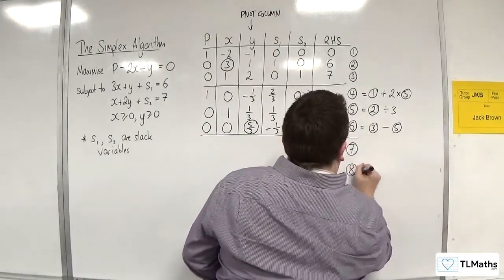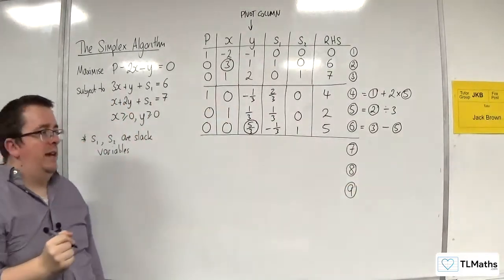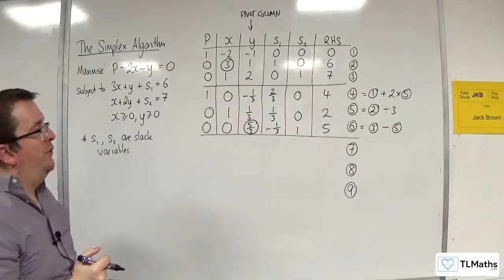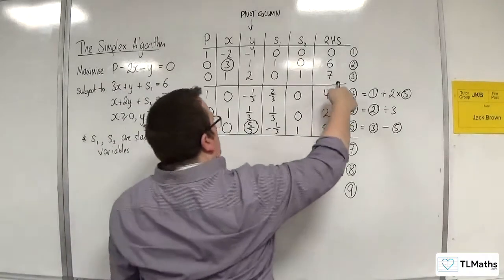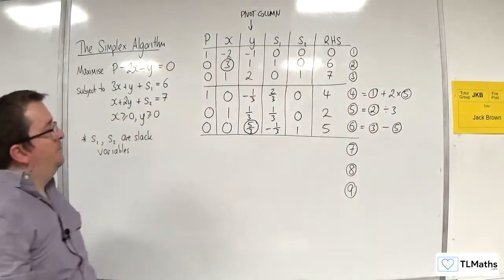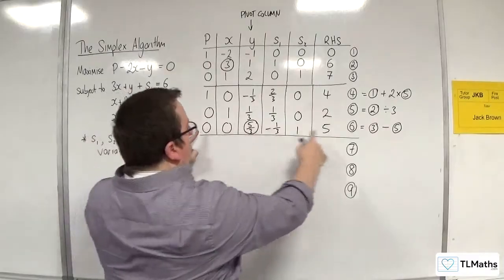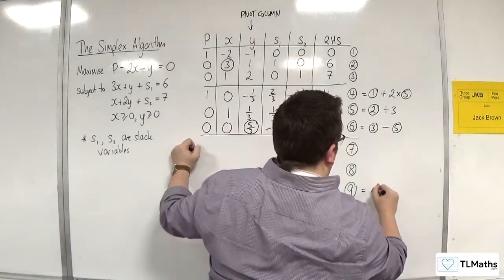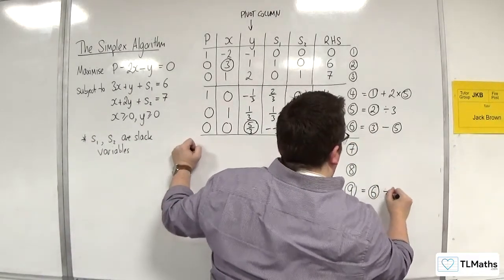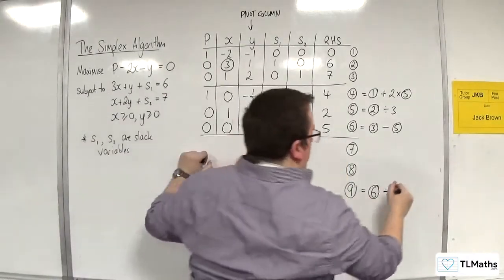So now I go to the second iteration to form equations 7, 8 and 9. So equation 4, 5 and 6 become 7, 8 and 9 respectively. So I start off with equation 9, which is number 6, divided by, I need to get that to be 1, so I divide by 5 thirds.